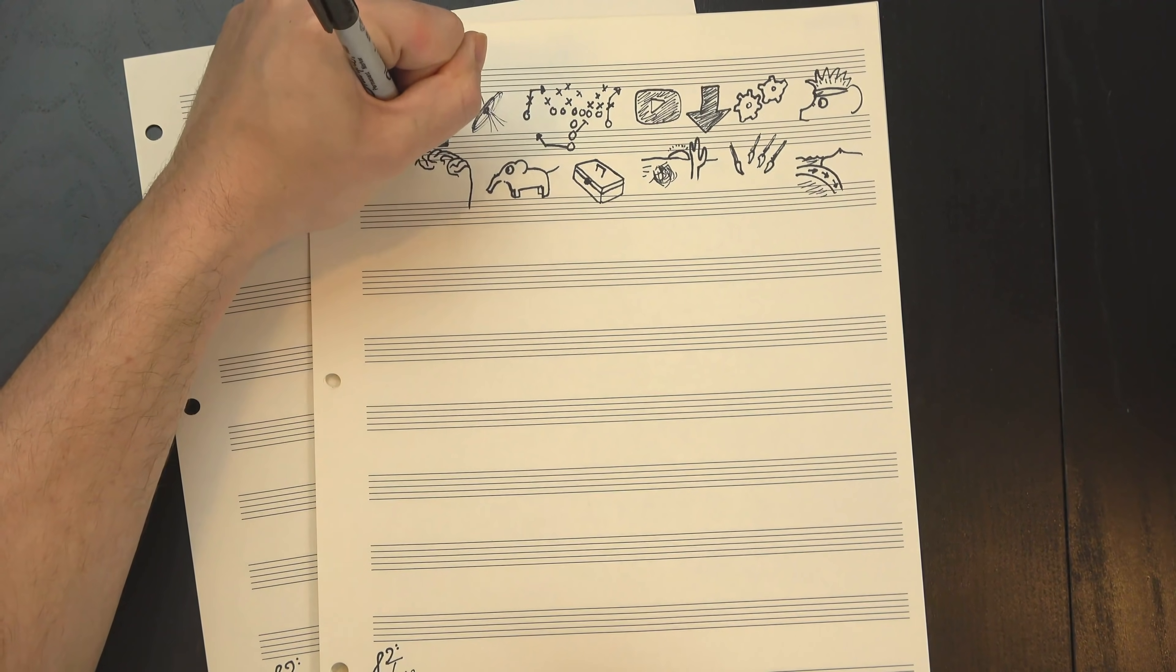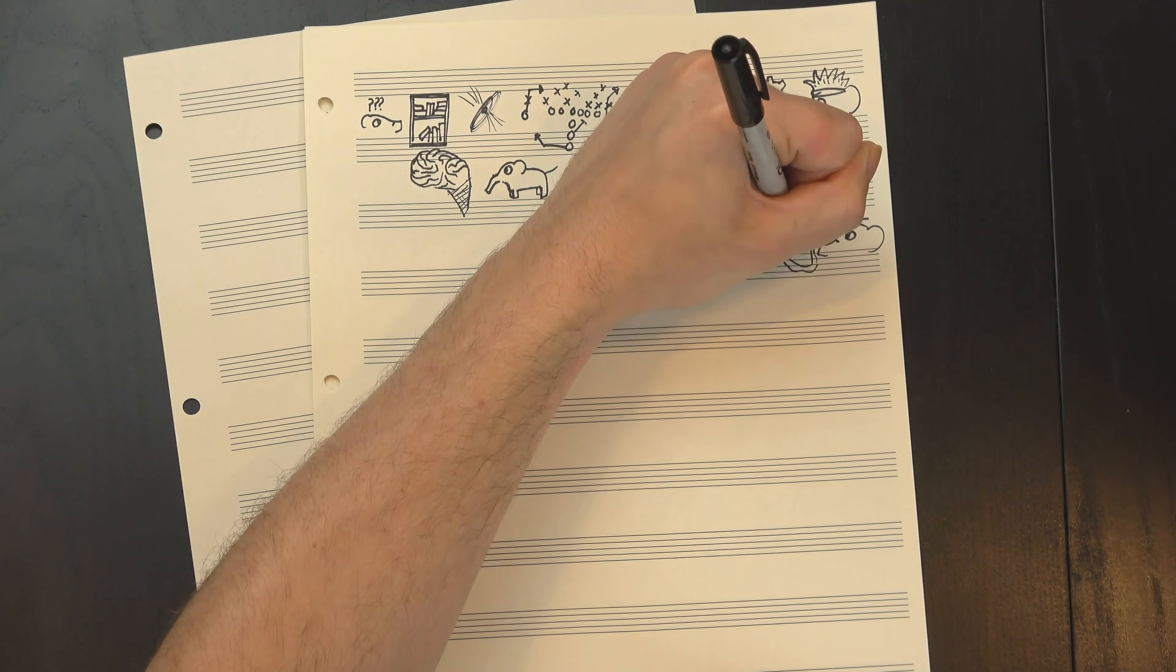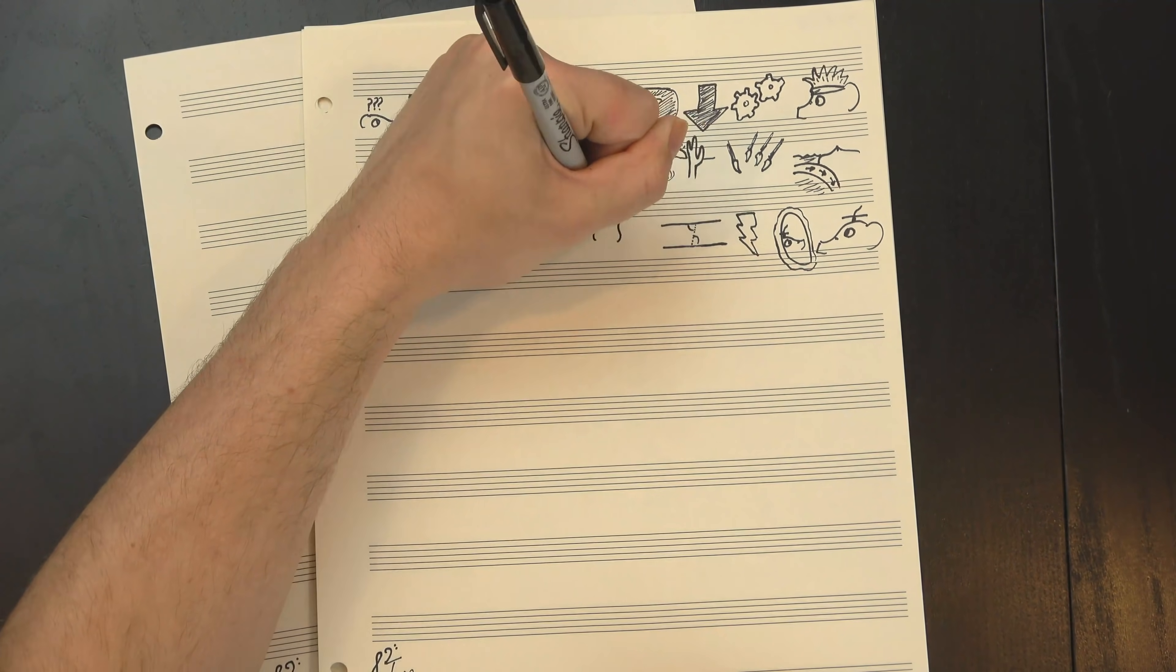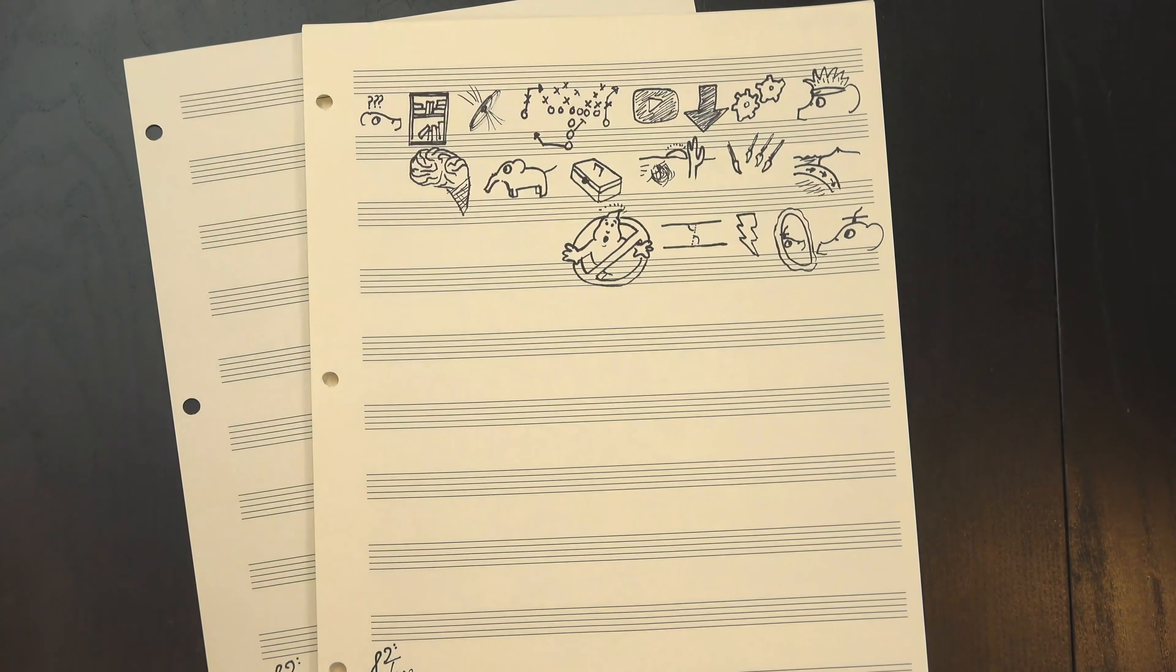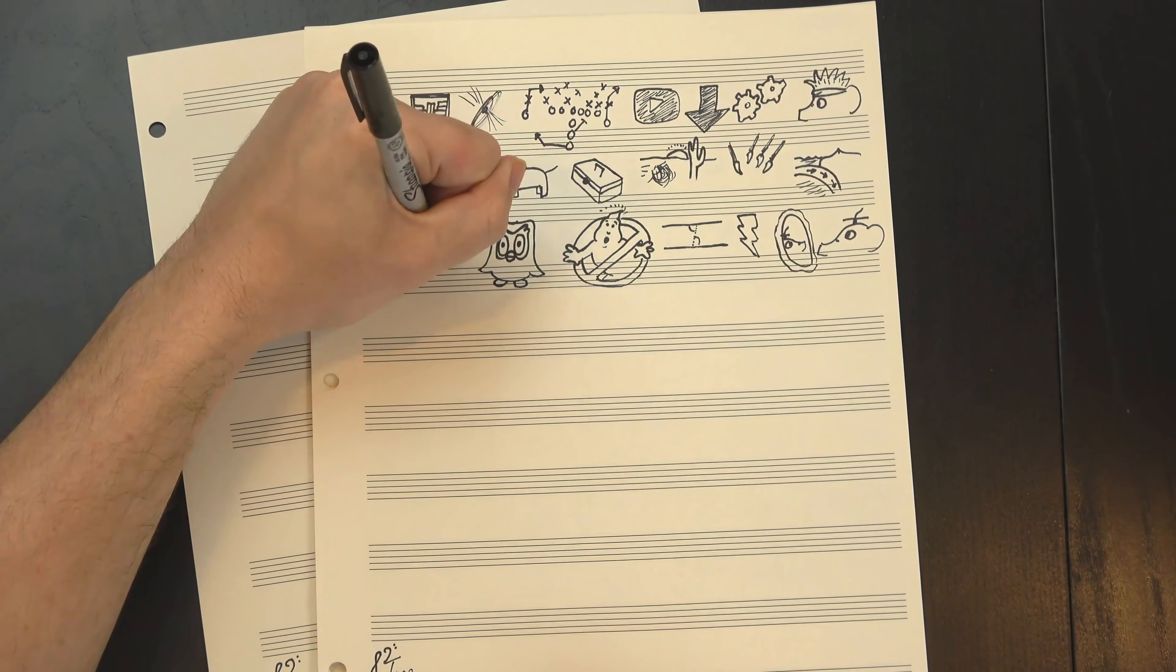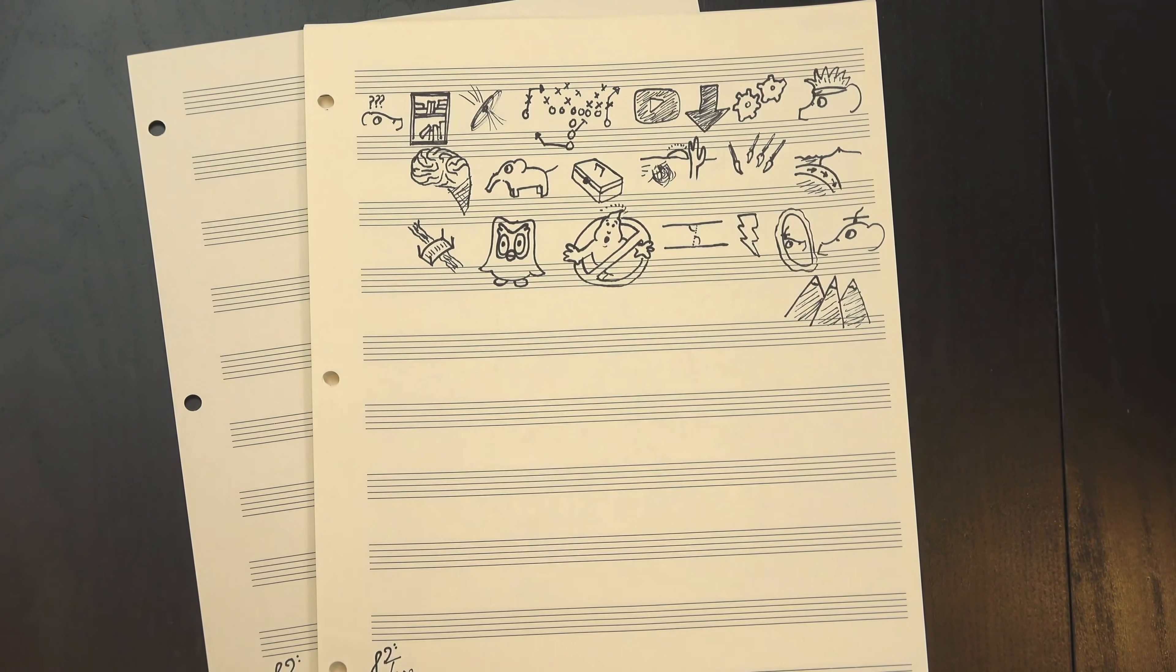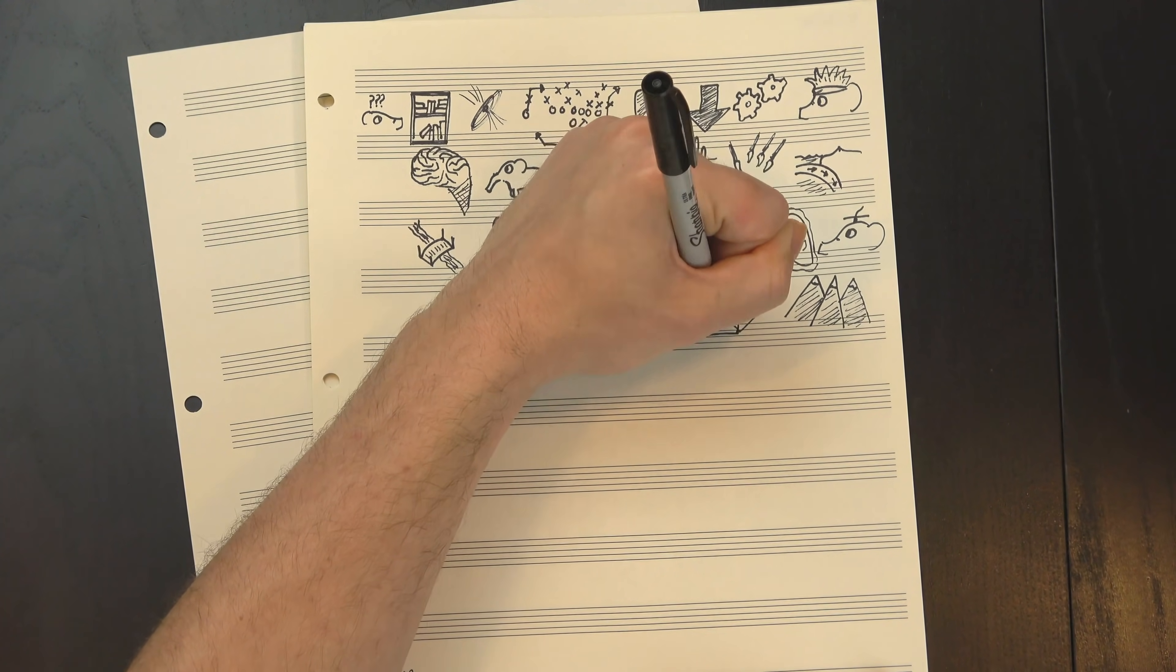You see, the human brain is an association machine, which makes it way easier to learn something if it looks like something else that you already know. Like, earlier in the video, when I mentioned parallel fifths, I compared them to parallel octaves. That way, I didn't have to spend a bunch of time re-explaining why it wasn't allowed. You already understood that, so all I had to do was get you to translate it into a new context. Analogies let us build bridges, connecting distant parts of the theoretical landscape and creating larger, more coherent, and more easily understood structures.